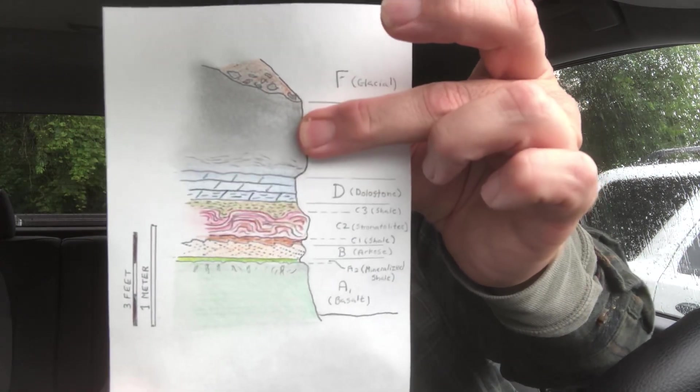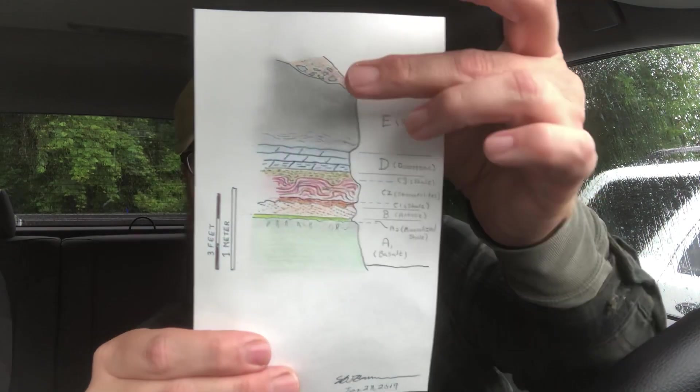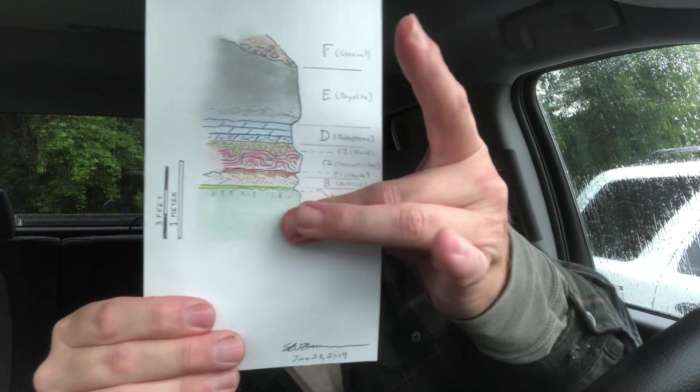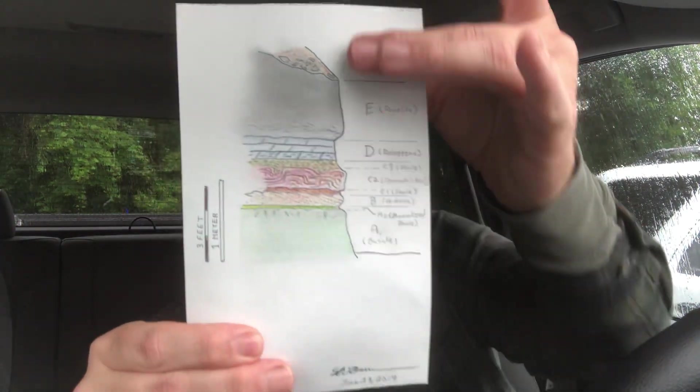So you got some zircons there. So you date this, and you get 1013 plus or minus 2 million years. So now you have a bracket.